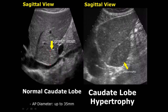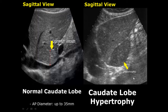Here we have the caudate lobe in sagittal view. It should measure 35 millimeters in AP diameter. This line here is the ligamentum venosum. Over here is the hypertrophy of the caudate lobe — you can see it is enlarged. This occurs in conditions such as liver cirrhosis.